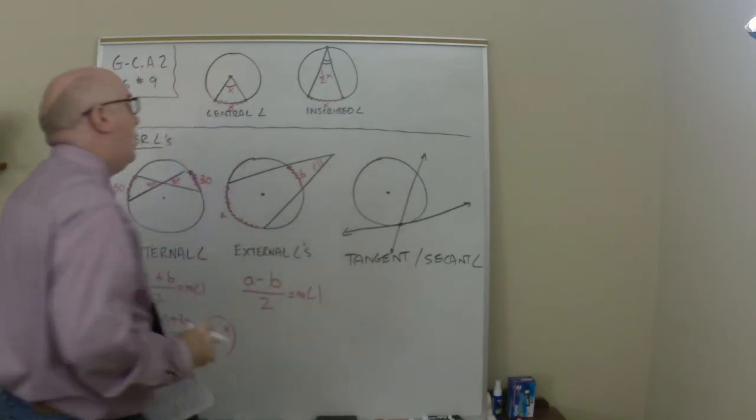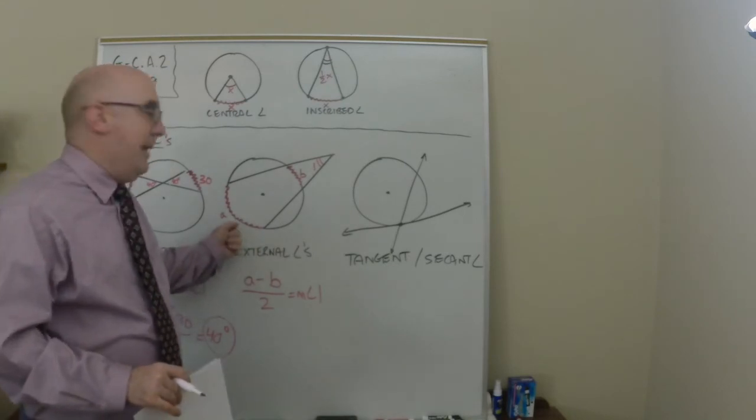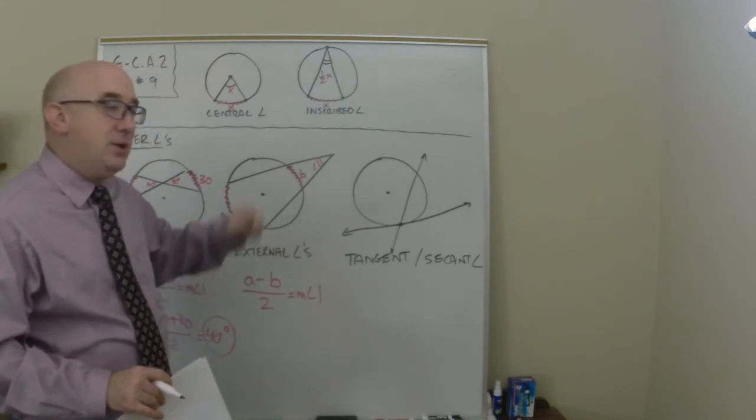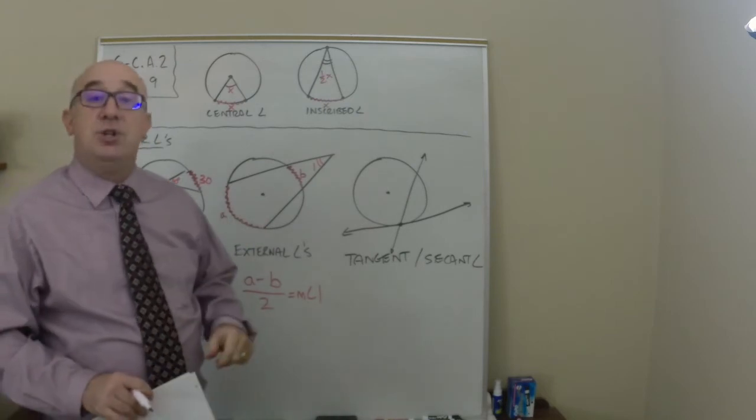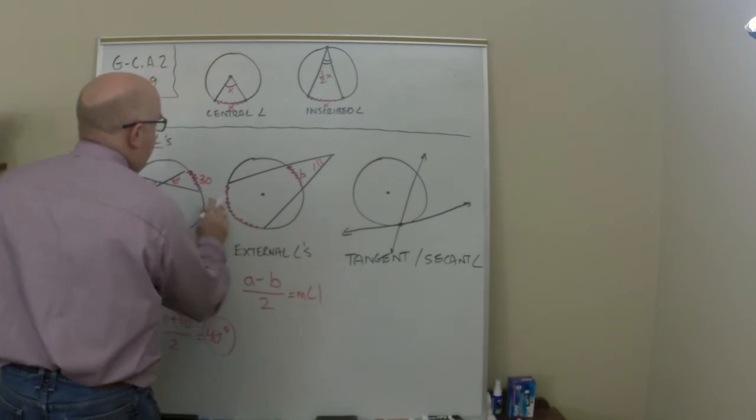But it is the difference. It's the difference divided by 2 equals the measure of angle 1. In this case we take the larger arc, the big back arc, subtract the front arc and divide by 2 to get the angle of angle 1.